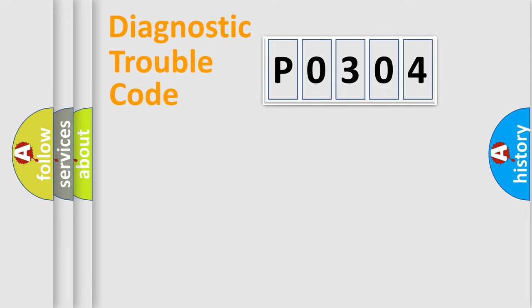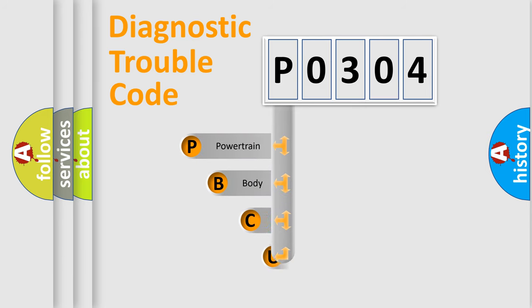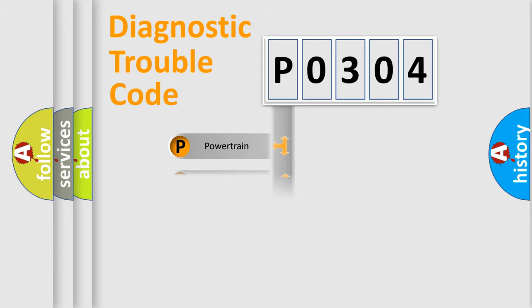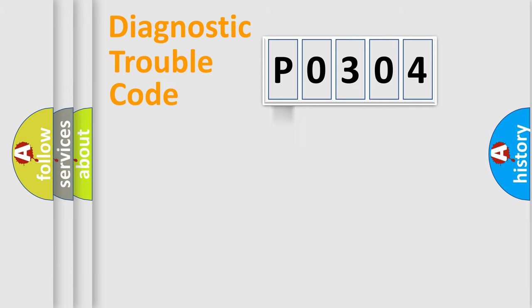First, let's look at the history of diagnostic fault code composition according to the OBD2 protocol, which is unified for all automakers since 2000. We divide the electric system of an automobile into four basic units: Powertrain, Body, Chassis, and Network.